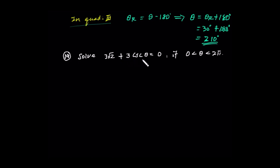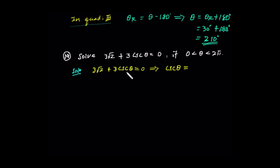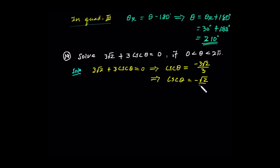Solve 3√2 plus 3·csc(θ) equals 0, where θ is between 0 and 2π. Solving for csc(θ): csc(θ) equals negative 3√2 divided by 3, so csc(θ) equals negative √2. Since cosecant is the reciprocal of sine, this implies sine of θ equals negative 1 over root 2.